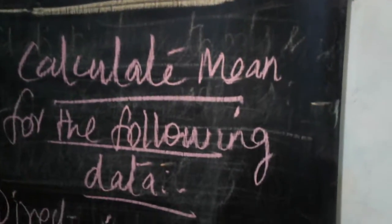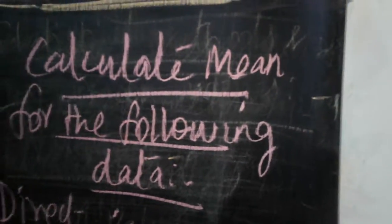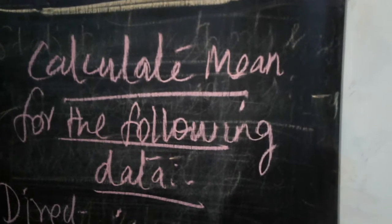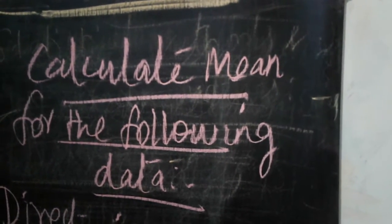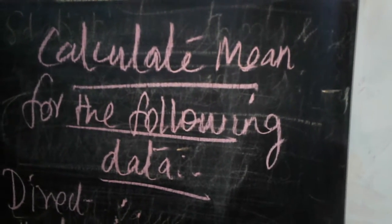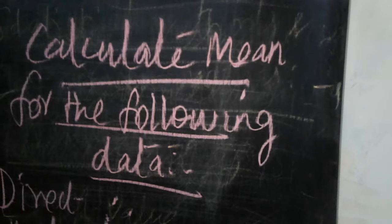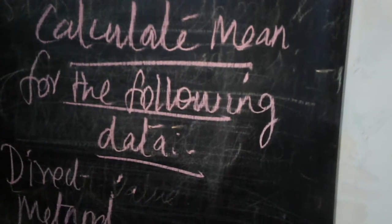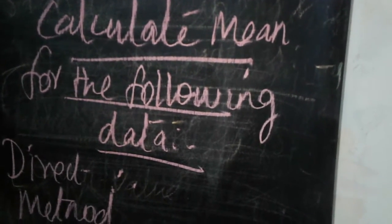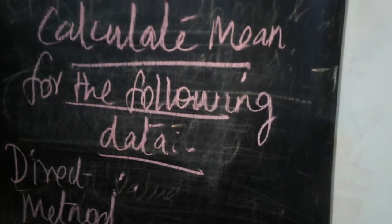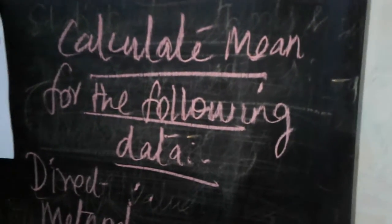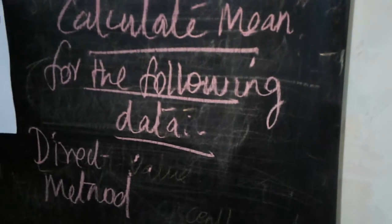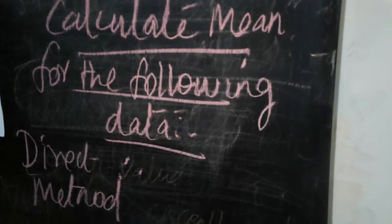Today we are going to see and discuss the first and most important statistic. We will calculate the mean for the following data. Mean is the most important method in averages. Part B carries two marks and part C carries three marks each.